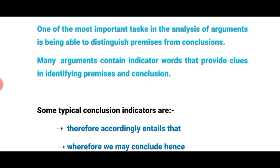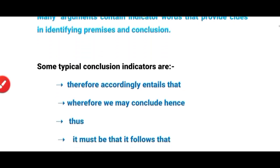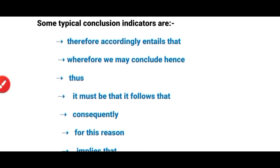One of the most important tasks in the analysis of argument is being able to distinguish premises from conclusions. Many arguments contain indicator words that provide clues in identifying premises and conclusions. Some typical conclusion indicators are: therefore, accordingly, entails that, wherefore, we may conclude, hence, thus, it must be that, it follows.